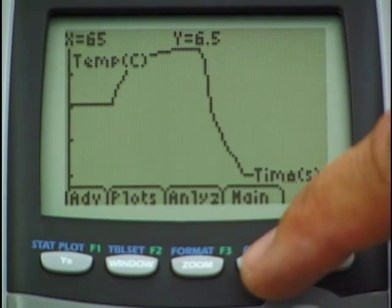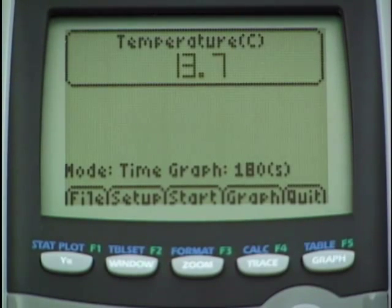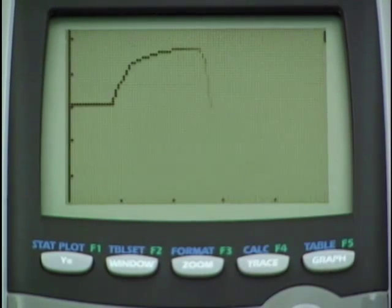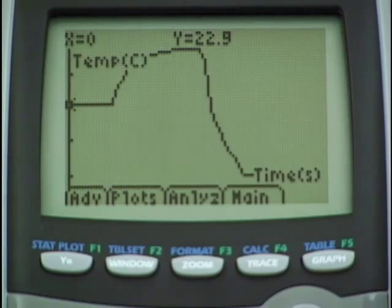To return to the main screen I just choose the main option. There we are back at the main screen. If I wanted to redisplay the graph I would just press the graph option and there's my graph. We're back to that previous screen.